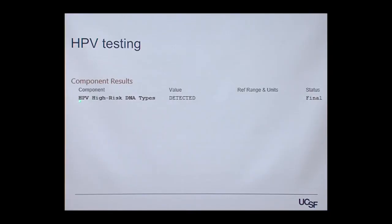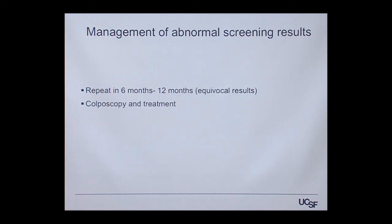With the HPV test, we get a report stating high-risk HPV DNA types detected or not detected. Based on the combined screening results, more equivocal findings prompt repeat testing in 6 to 12 months, while stronger results lead to colposcopy and hopefully treatment.